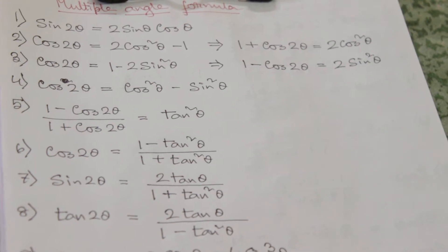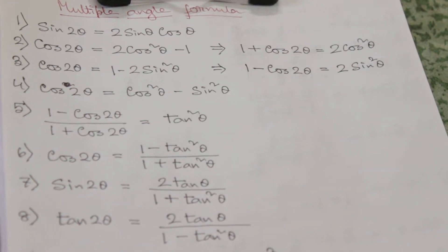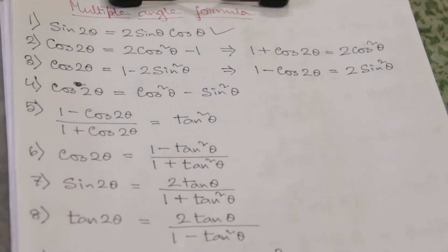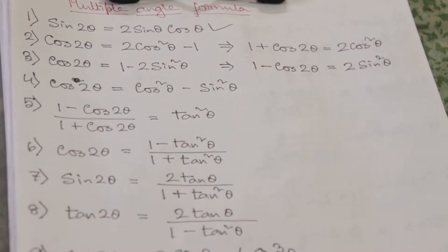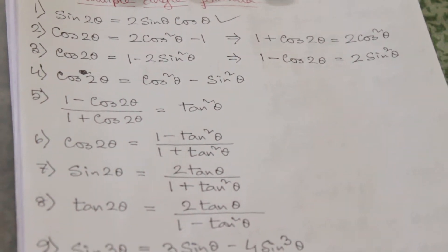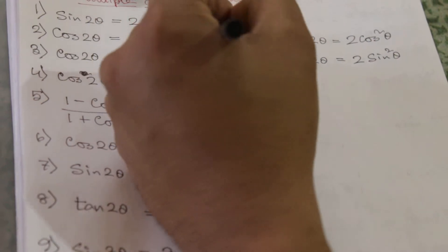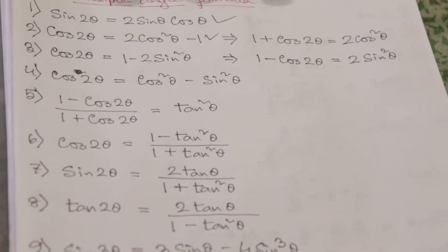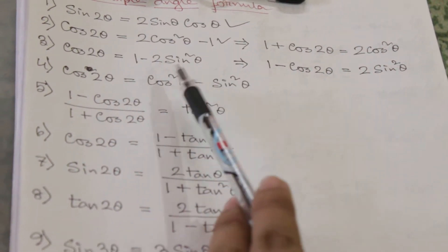The first formula is sin 2θ equals 2 sin θ cos θ. Next formula is cos 2θ which is equal to 2 cos²θ minus 1. There is one more formula of cos 2θ: cos 2θ equals 1 minus 2 sin²θ.